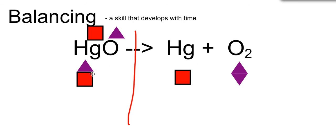Now the goal is to have the same number of shapes on both sides. So I have two triangles on this side. I'm going to need another triangle on this side.